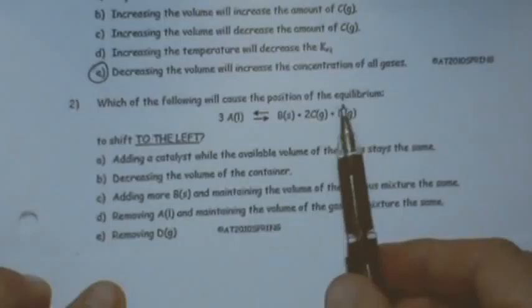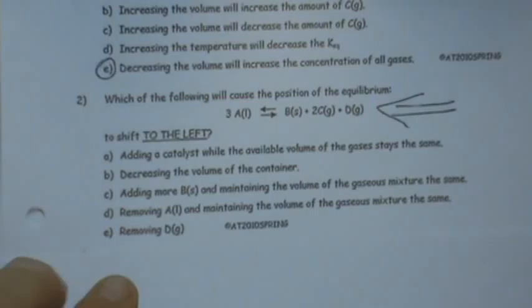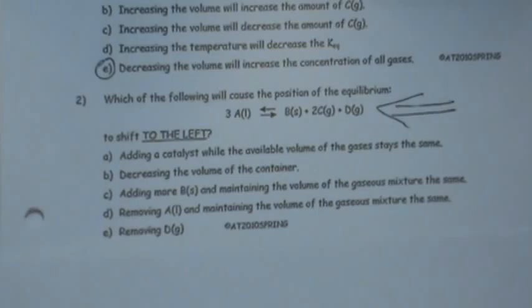Okay, let's see one by one. Which of the following will cause the position of the equilibrium to shift to the left? So we want to go this way, right? Adding a catalyst while the volume stays the same. Adding a catalyst will not change the position of equilibrium. It just changes the rate. So that's not.